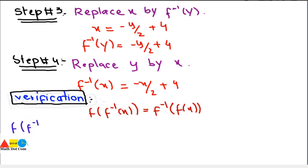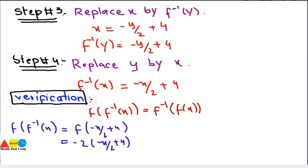For the left-hand side: f(f⁻¹(x)) = f(-x/2 + 4). We substitute (-x/2 + 4) into the original function f(x) = -2x + 8, giving -2(-x/2 + 4) + 8. After simplification we get x. So f(f⁻¹(x)) = x.